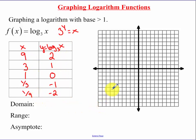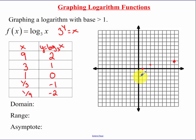So let's graph these points. I have x is 9, y is 2. We have when x is 3, y is 1. Then 1 and 0. And for these last ones, you just have to approximate them — it's okay if they're not perfect.